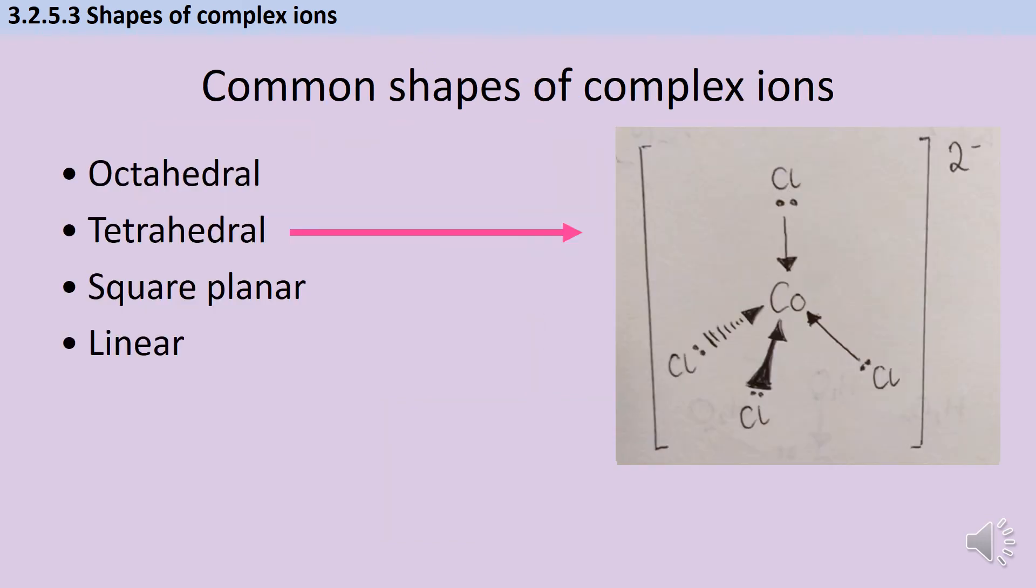Next up is everybody's favourite shape from AS, the tetrahedron. So just like you would have with a methane molecule or an ammonium ion, we've got four bonding groups, four ligands in this case, around our central transition metal atom or ion.